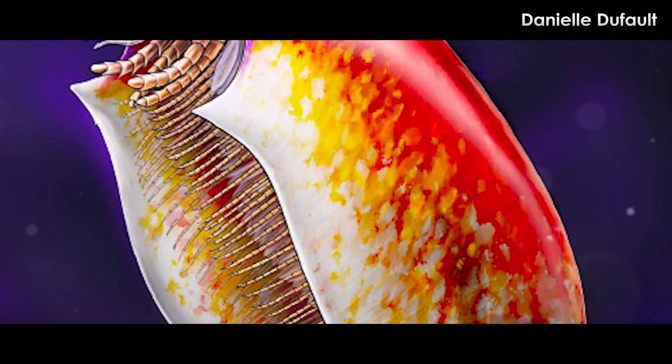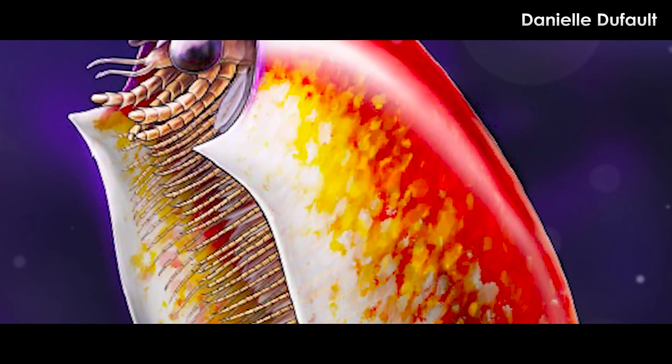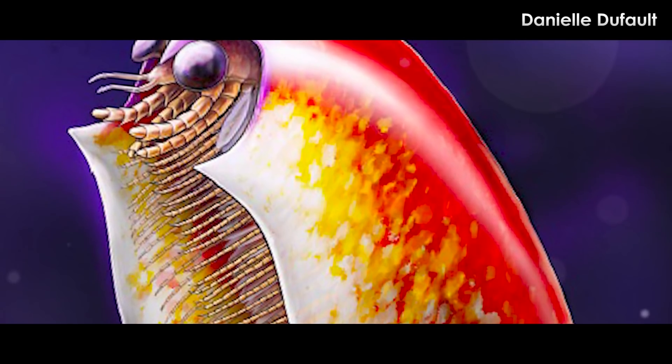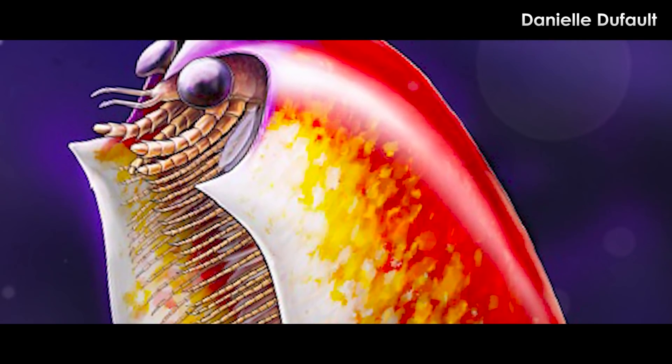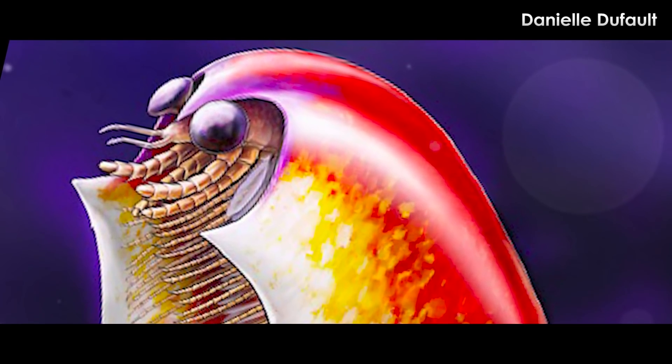It was noted that the segments in the thorax and pygidium of Pacucaris increase at the same rate. If this is happening like a dozen trilobites, then that would mean segments created in the tail end matched the rate at which they were released.